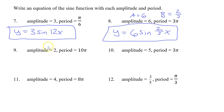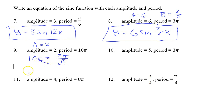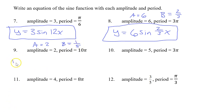For number 9, the amplitude is 2, so a could equal 2 or negative 2. If the period is 10 pi, that means 10 pi equals 2 pi over b, because the period is always equal to 2 pi over b. Swapping gives b equals 2 pi over 10 pi. The pi's cancel out, and 2 over 10 reduces down to 1 fifth. So b equals 1 fifth, and the equation is y equals 2 sine of 1 fifth x.